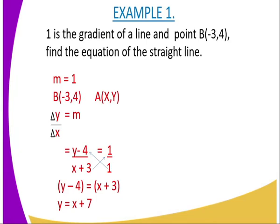And there is another example here. Example 1: 1 is the gradient of a line and point B(-3, 4), find the equation of the straight line.